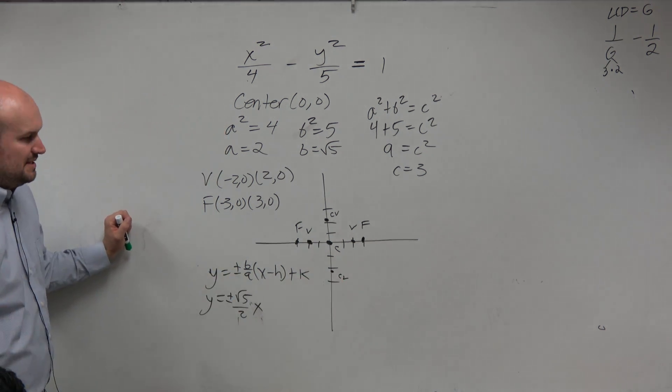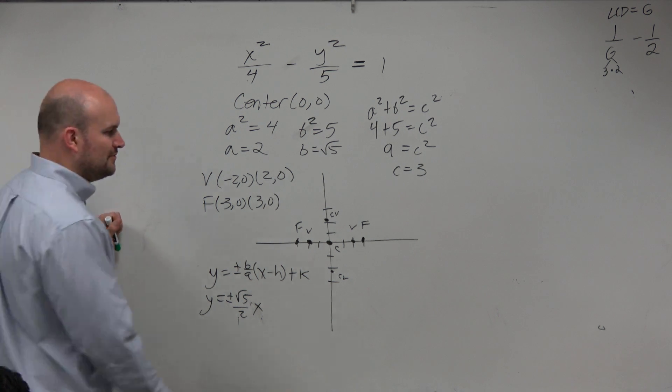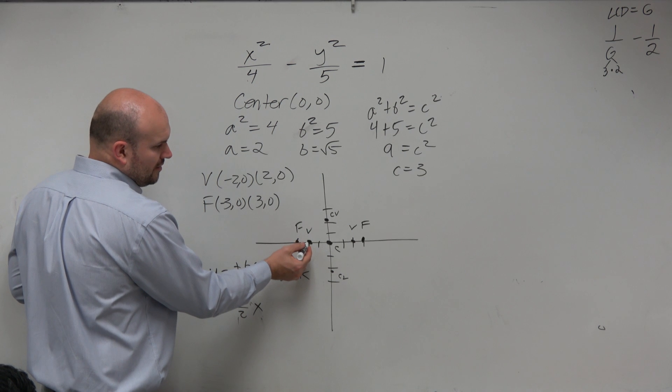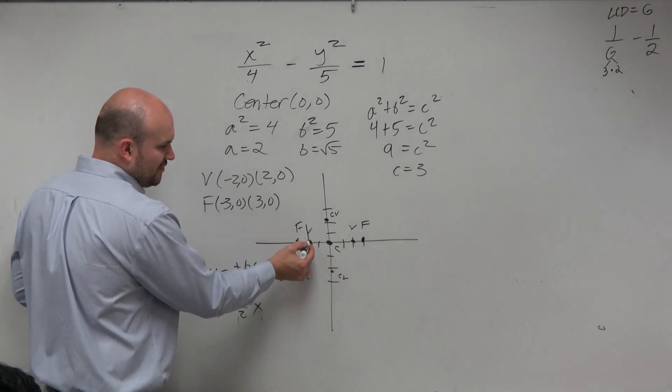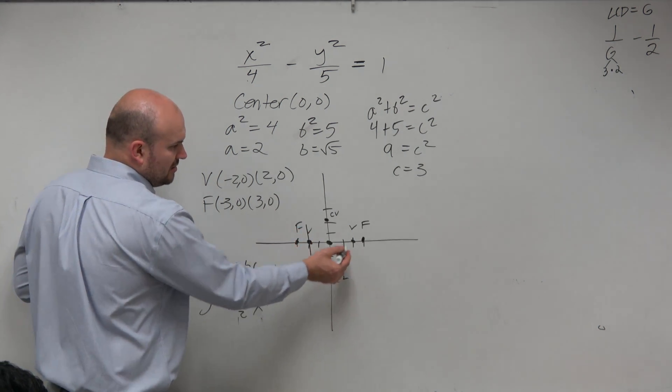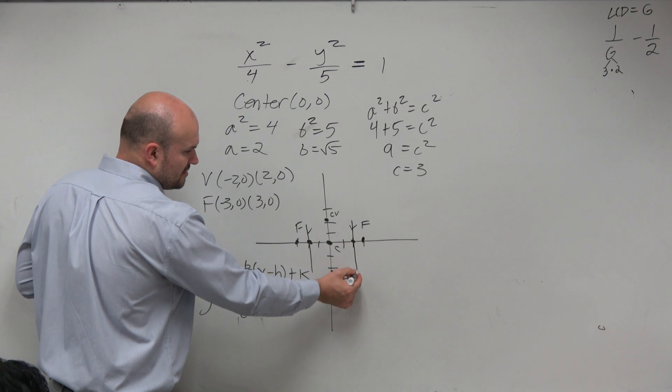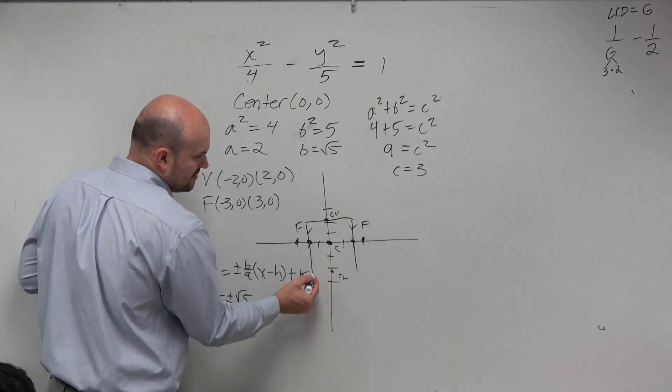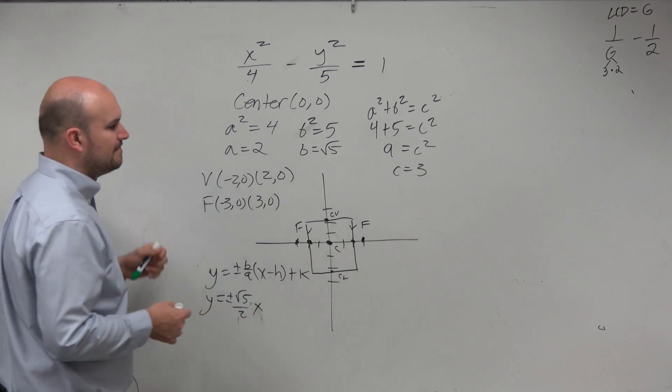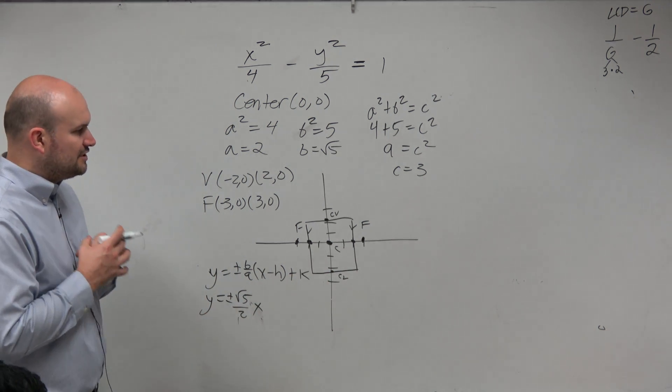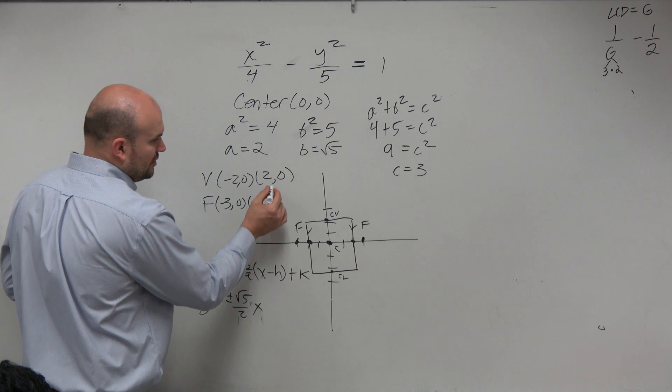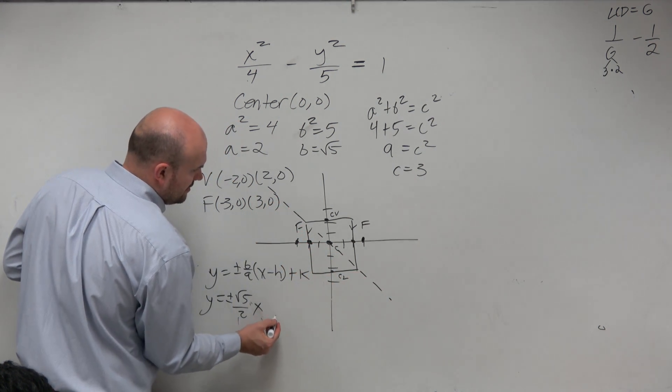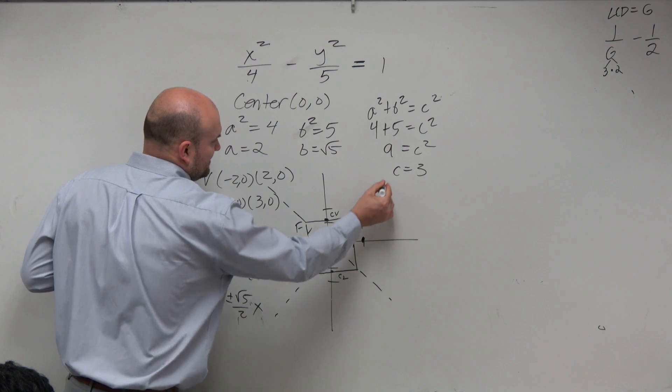Again, just sketching, just estimate. So what we could do, if we wanted to find how these asymptotes look, we could create a box. We can create vertical lines through our vertices, and then horizontal lines through our co-vertices. Then, actually the shape of the asymptotes go through the corners of this box that we created, and they intersect at the center.